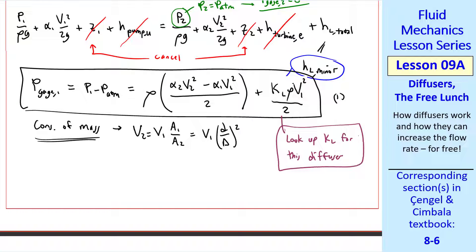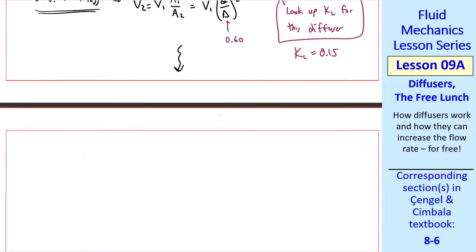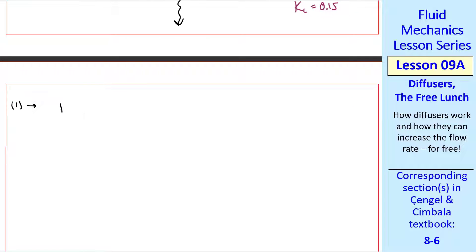We look up the minor loss coefficient for this diffuser. It turns out to be 0.15. Since D over D is 0.60. And the included angle is 20 degrees.